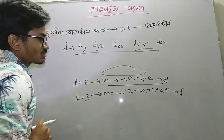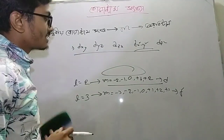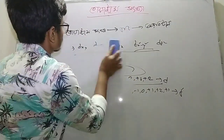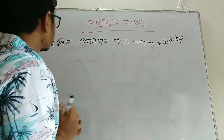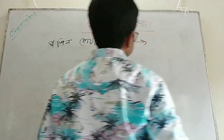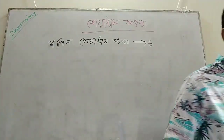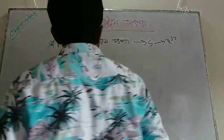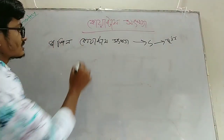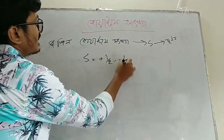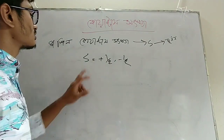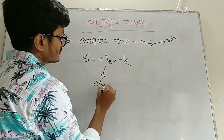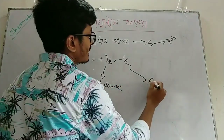If the electron is considered, we can describe our spin quantum number. The spin quantum number is 1/2. The values are plus 1/2 and minus 1/2. Plus 1/2 is clockwise, and minus 1/2 is anti-clockwise.